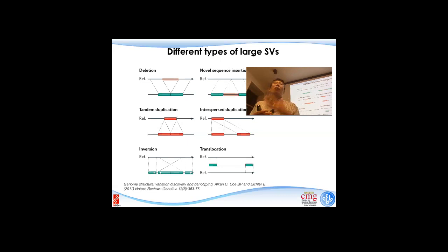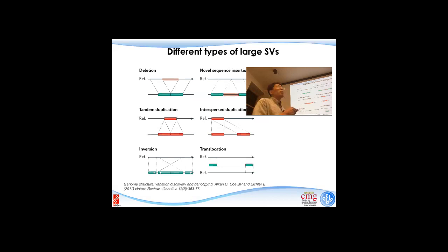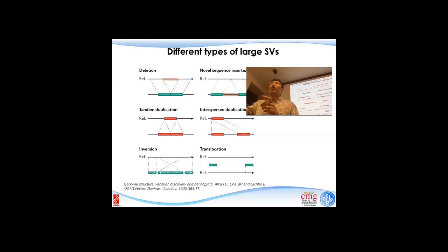For example, Down syndrome — we know there are three copies of chromosome 21. Other diseases involve a very big chunk of chromosome being missing. Besides deletion, there's also novel sequence insertion — in our reference there's nothing, but in this particular individual a big chunk of sequence is pushed in. There's also mobile element insertion. These mobile elements are more like retroviruses hanging around in our genome. Some are still active, believe it or not — they can come out and insert into parts of the genome. Most are dead and immobilized, but some are still jumping.